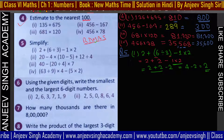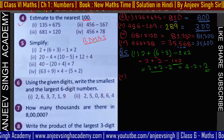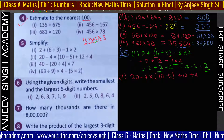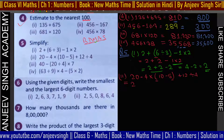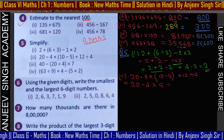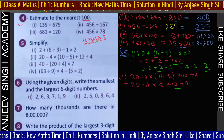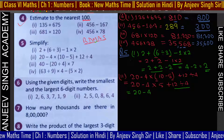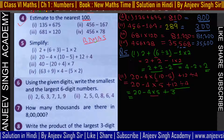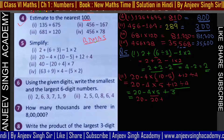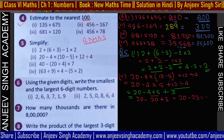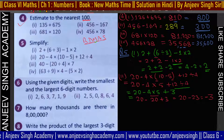Addition पहले: 2 plus 2 = 4, minus 2 = 2। Answer आया 2। Second question: 20 minus (4 × (10 minus 5)) plus 12 ÷ 4। BODMAS के हिसाब से bracket पहले: 10 minus 5 = 5। तो 20 minus 4×5 plus 12÷4। Division पहले: 12÷4 = 3। फिर multiplication: 4×5 = 20। तो 20 minus 20 plus 3।